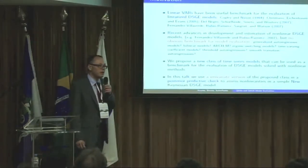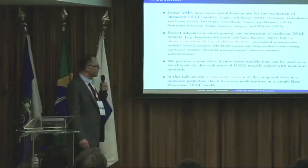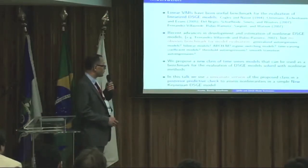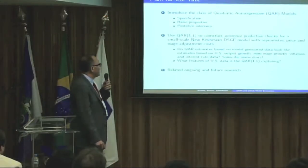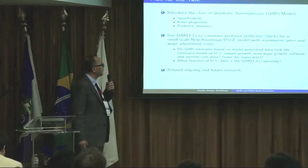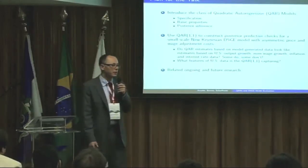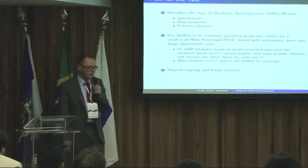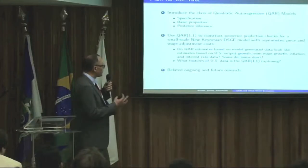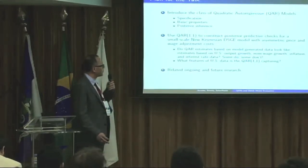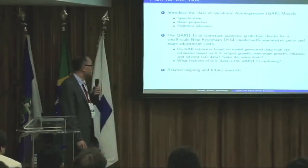Ideally we want to do this in a multivariate way, but so far we've taken small steps and what you'll see is results from univariate versions of these nonlinear time series models. Basically, I'll talk you through what we call quadratic autoregressive models — how they're set up, why they're set up that way, what their properties are, and how you can estimate them. And then we use them to construct what's called a posterior predictive check in the Bayesian literature. We'll apply that to a small-scale New Keynesian DSGE model with asymmetric price and wage adjustment costs.